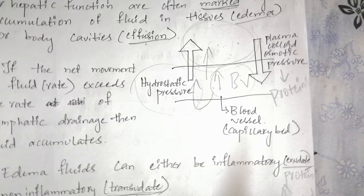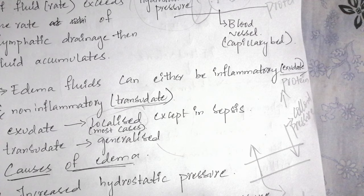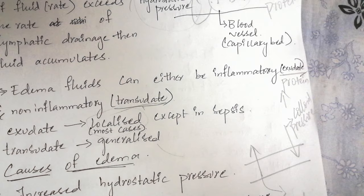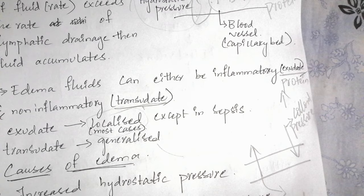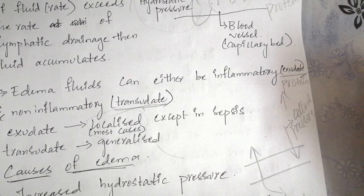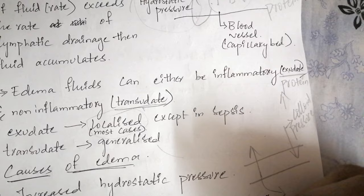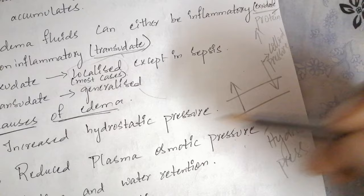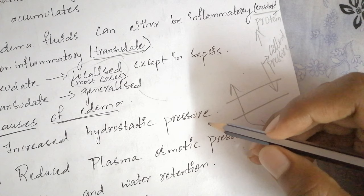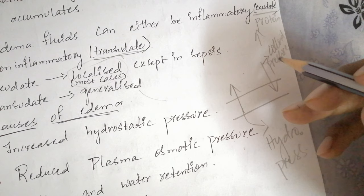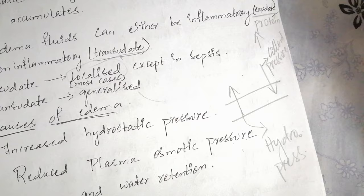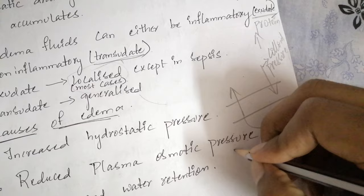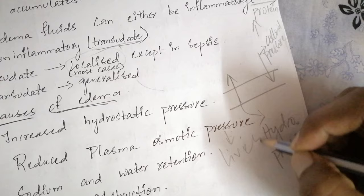The second cause of edema is reduced plasma osmotic pressure. The plasma colloidal osmotic pressure at the venular end decreases when the protein content in the blood decreases. If the quantity of proteins in the blood decreases, it leads to reduced plasma osmotic pressure, which doesn't provide sufficient pressure to take back all the fluid that has exited at the arterial end, so fluid can't be pulled back in. Reduced plasma osmotic pressure is mainly caused by decreased synthesis of proteins, as in liver diseases.